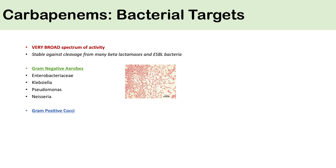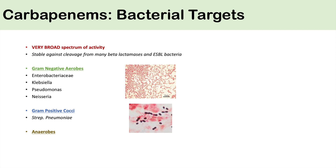The carbapenems also have activity against gram-positive cocci. They can have activity against Streptococcus pneumoniae, and you're going to use carbapenems for strep pneumoniae when there is a strain that is resistant to other types of penicillins or antibiotics — so generally beta-lactamase producing strep pneumoniae. The carbapenems are also useful for some anaerobes. What can be easier is to remember what they're not effective against: Enterococcus faecium, Burkholderia cepacia, and MRSA.